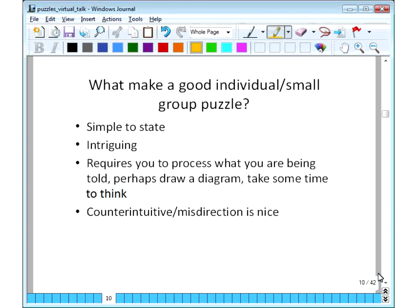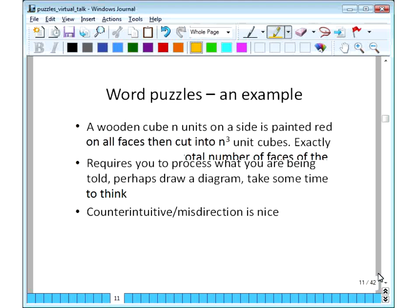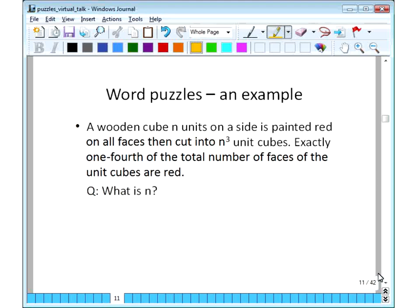So what makes an individual small group puzzle? What makes a good one? I think puzzles that are good for this sort of thing are ones that are simple to state, slightly intriguing, ones that require you to process some information and perhaps draw a diagram and things like that, but take some time to think about what you're being asked. So I suppose what I'm saying is that this sort of puzzle is good when it's the sort of puzzle that gets you into the Polya-Mason-type problem-solving approach. And puzzles that are counter-intuitive, or that involve misdirection, are nice as well. So here's an example of a word puzzle. I'm going to leave this up for a minute or so that you can have a go and answer it. So there's a wooden cube, n units on a side, so an n by n by n wooden cube is painted red on the outside and then cut into n cubed unit cubes. So exactly one-fourth of the total number of faces of the unit cubes are red. The question is, what is n? I'll leave that with you for a moment.